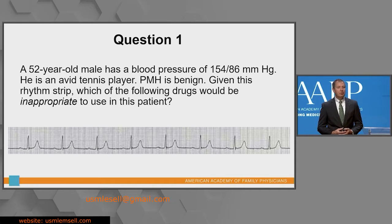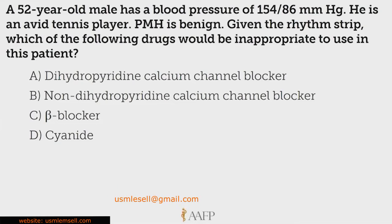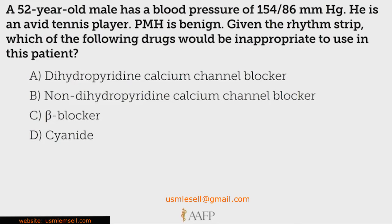Question one: a 52-year-old male who is an avid tennis player with a blood pressure of 154 over 86. Past history is benign. Given this rhythm strip, which one of the following drugs would be inappropriate to use in this patient? Options are: A, a dihydropyridine calcium channel blocker; B, a non-dihydropyridine calcium channel blocker; C, a beta blocker; and D, cyanide. Which of these would be inappropriate to use?